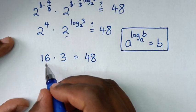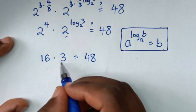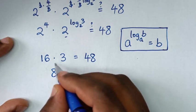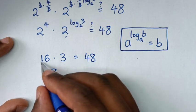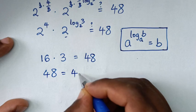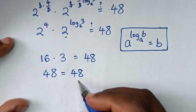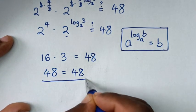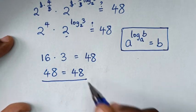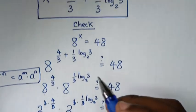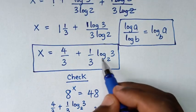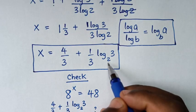So 16 times 3 equals 48. The left side and right side are equal, so it is confirmed that the value of x is 4 over 3 plus 1 over 3 log of 3 base 2 is correct.